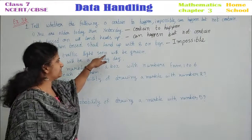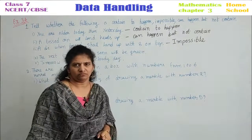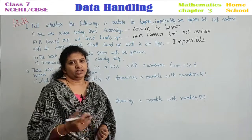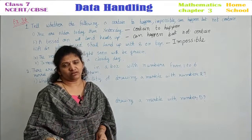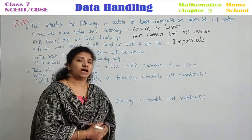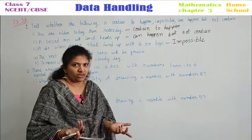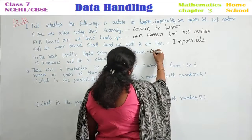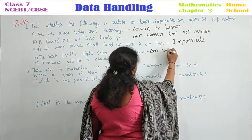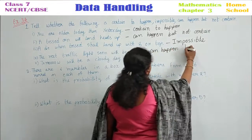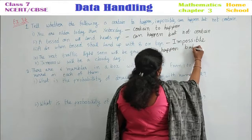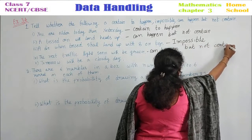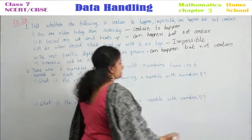Next one: The next traffic light seen will be green. Who knows? The next traffic signal — either it may be green or red. How can you guess? It may or may not be. So what can you write? Can happen but not certain — can happen but not sure. Sure and certain are the same.